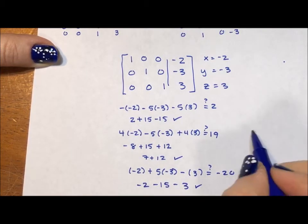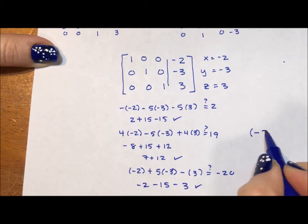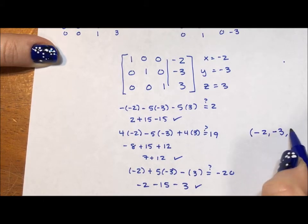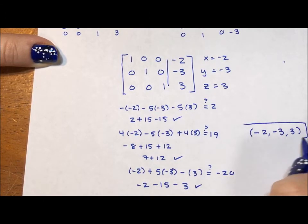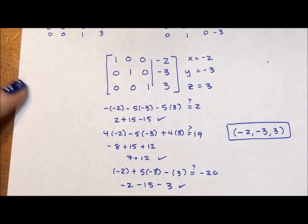So my answer to the system is -2, -3, 3 written as an ordered pair. I hope you've enjoyed this video. Please subscribe to my YouTube channel, like my Facebook page, and I'll see you on the next video. Thanks!